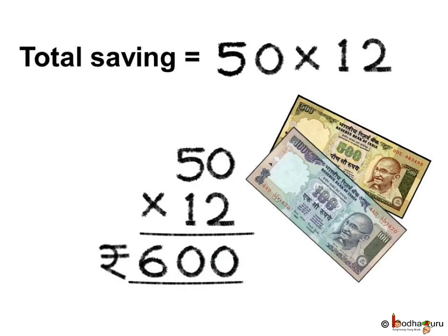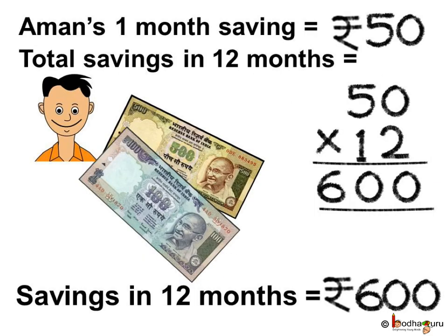As we need to find the total amount he saves in 12 months, we need to multiply the money he saves in 1 month with the total number of months, which is 12. Let us multiply: 50 multiplied by 12.